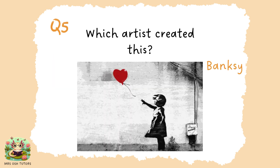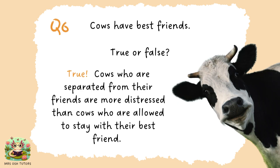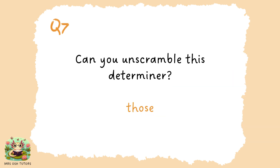Question five: this is a famous piece of art by Banksy. Question six: it's true — cows do have best friends. If they're separated from their friends they become quite upset, more so than cows allowed to stay with their friends. So maybe think about that next time! Question seven: a determiner is a word that tells us more about which or how many nouns, and 'those' was the determiner. Well done if you managed to get that.